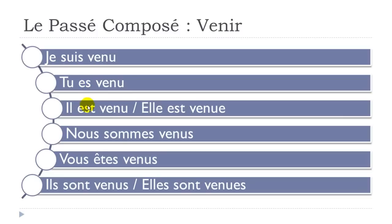To write correctly: add E for feminine (elle est venue), S for plural (nous sommes venus), ES for feminine plural (elles sont venues). Phonetically all forms sound like 'venu,' but in writing you must apply the agreement. Let's repeat: 'je suis venu,' 'tu es venu,' 'il est venu,' 'elle est venue,' 'nous sommes venus,' 'vous êtes venus,' 'ils sont venus,' 'elles sont venues.'